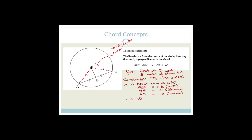Therefore, triangle ABO is congruent to triangle CBO, reason: side-side-side. Now, what are we trying to prove? We're trying to prove that OB is perpendicular to AC. From this congruency, we can say that angle ABO equals angle CBO. But they're on a straight line, therefore they have to equal 90 degrees. Therefore OB is perpendicular to line AC.